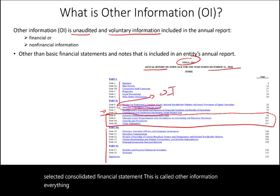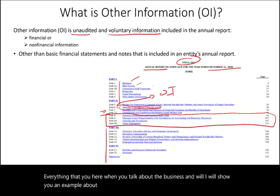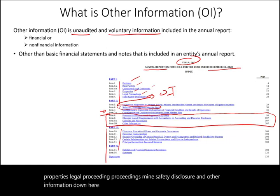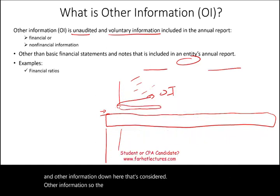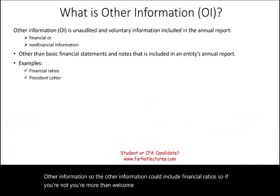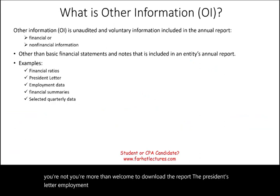Everything about the business — risk factors, unresolved staff commitments, properties, legal proceedings, mine safety disclosures, and other information listed — that's considered other information. Other information could include financial ratios, the president's letter, employment data, financial summaries, selected quarterly data, capital asset spending, and much more.